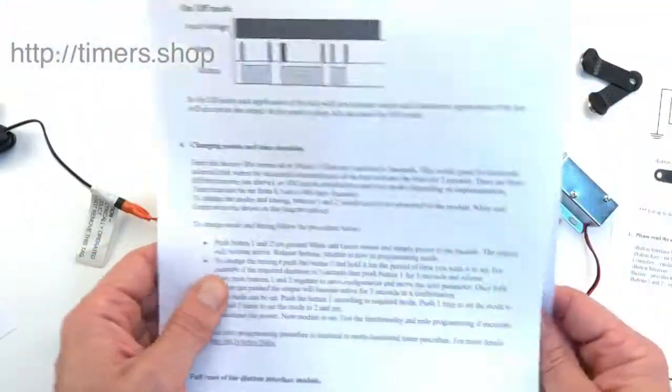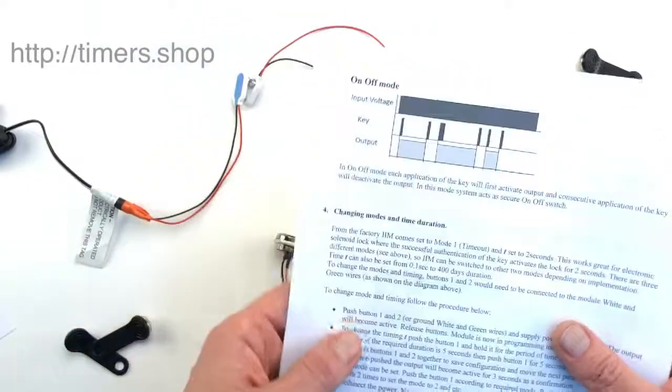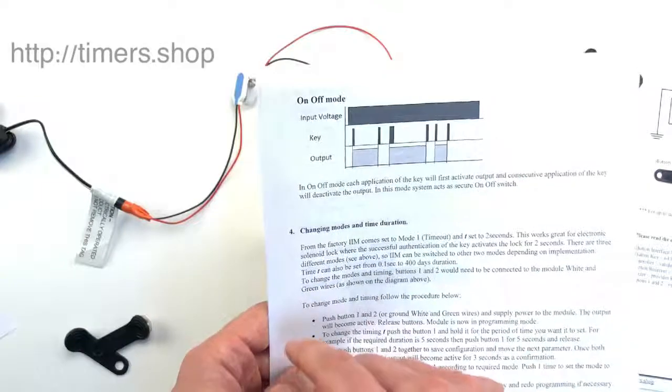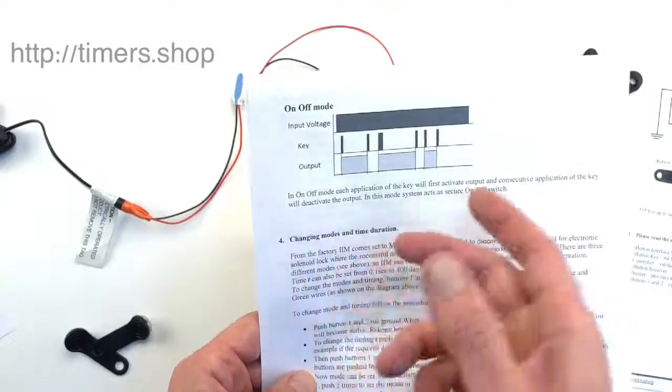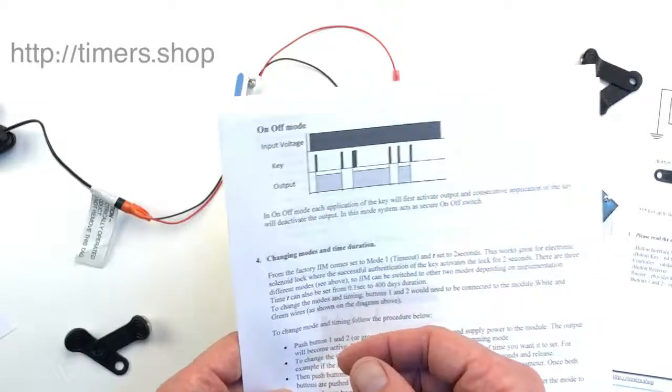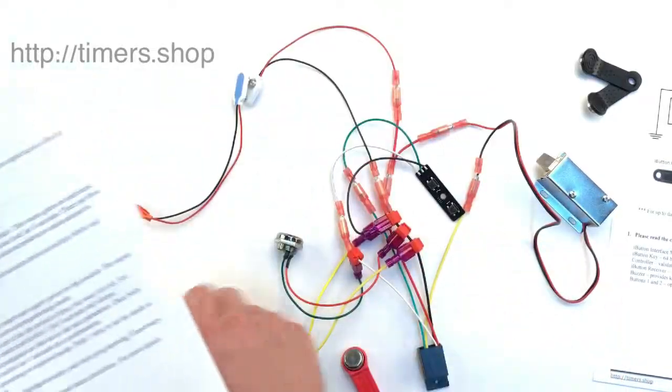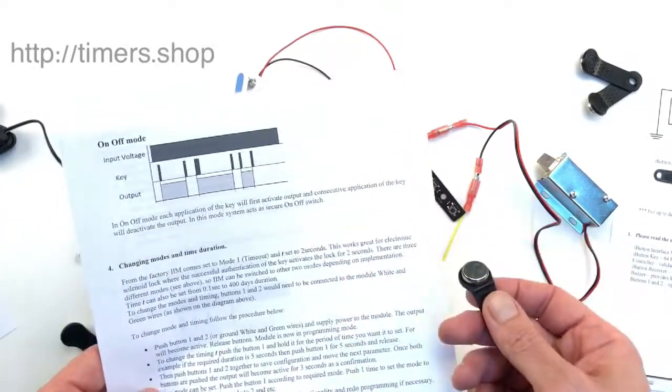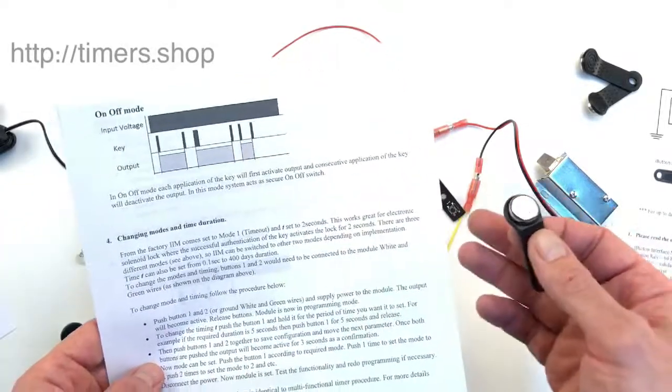And the third is basically an on-off mode. It doesn't have a timeout. The first touch of the key will activate the output, and it will stay active until you touch the key again. So it basically creates a secure on-off switch that only the person with the proper key could actually turn on or off the output, which could then control other devices.